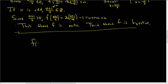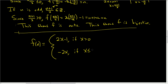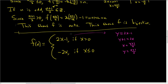Let's find the inverse. f(x) equals 2x minus 1 if x is greater than 0, and minus 2x if x is less than or equal to 0. For the top piece, we let y equal 2x minus 1 and solve for x: add 1 and divide by 2, so x equals (y plus 1) over 2. Then switch x and y: y equals (x plus 1) over 2. That's the inverse for the top piece.